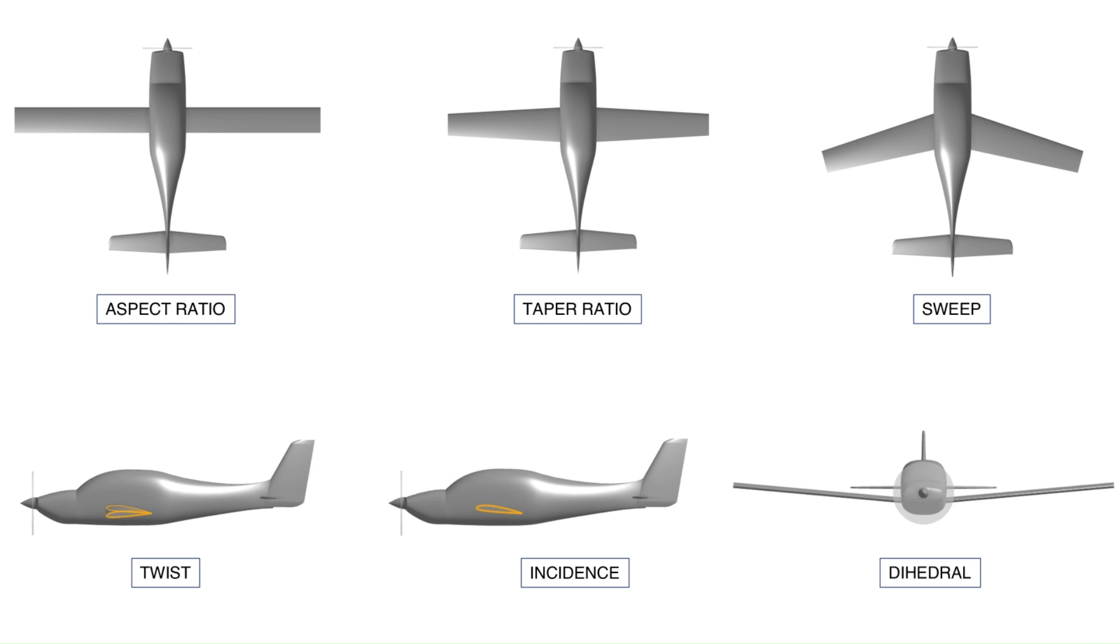The parameters discussed are aspect ratio, taper ratio, sweep, twist, incidence, and dihedral, all of which are crucial for wing design.